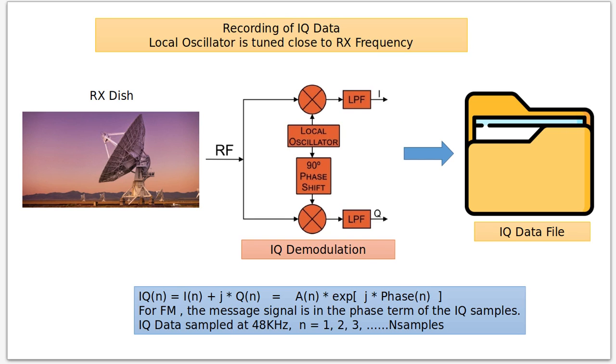So the local oscillator is tuned close to the transmitting frequency, and we're simply going to record the IQ to a file. The IQ sample rate is 48 kilohertz.